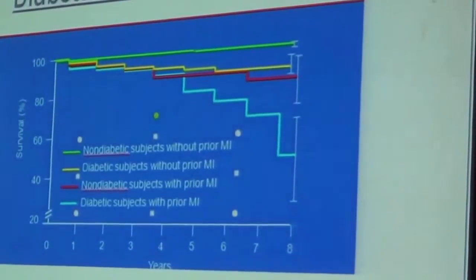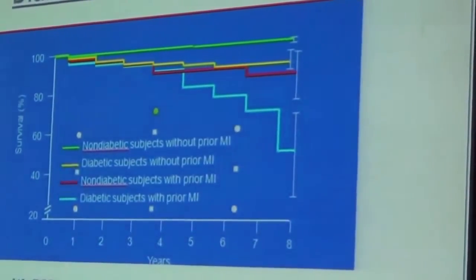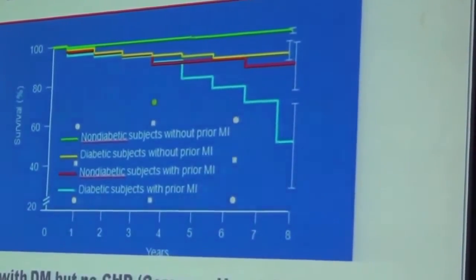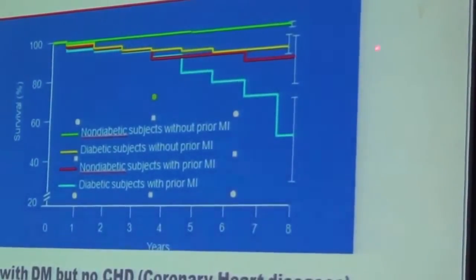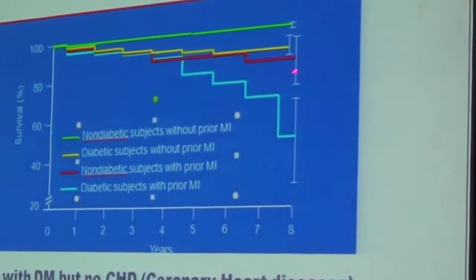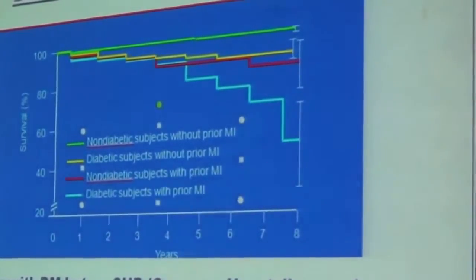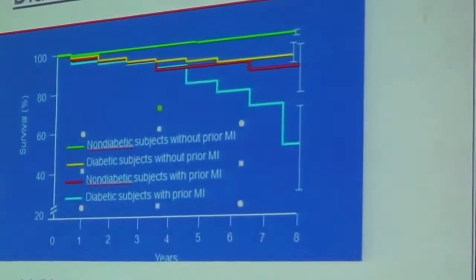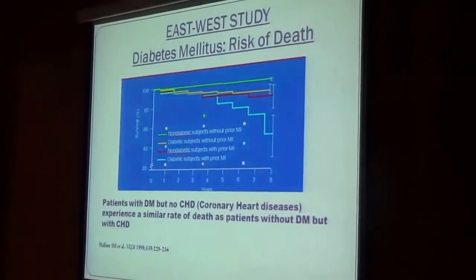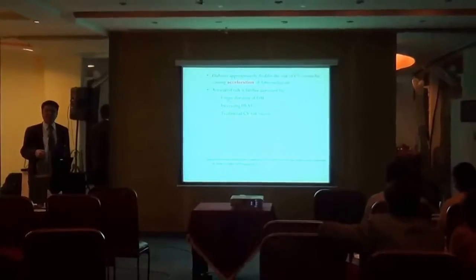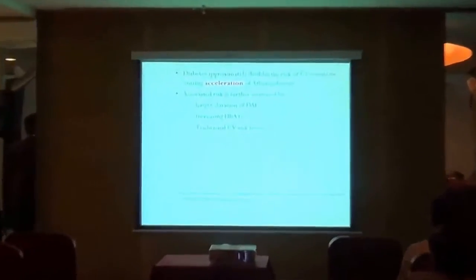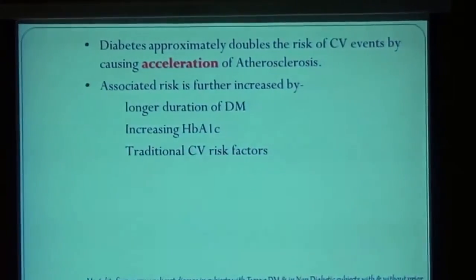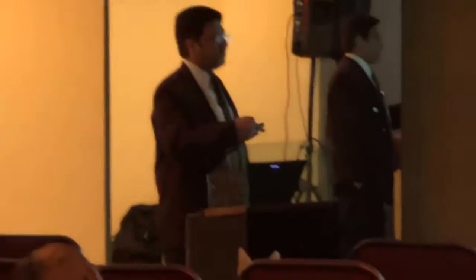Our area of interest is the yellow and red lines. The yellow line represents diabetic subjects who did not have any previous MI, and the red line represents non-diabetic subjects with a previous MI. They are closely following each other. This is the crux of the Haffner study — it told us that probably coronary artery disease and diabetes are equivalent to each other, sharing the same risk factors: obesity, smoking, dyslipidemia, hypertension, and so on.